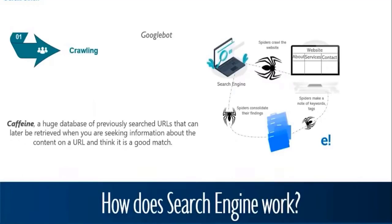Googlebot also uses sitemaps and databases of links discovered during previous crawls to determine where to go next. Whenever the crawler finds new links on a site, it adds them to the list of pages to visit next. If Googlebot finds changes in links or broken links, it will take note and update the index accordingly. To make sure Googlebot can correctly index your site, you need to check your site's crawlability.